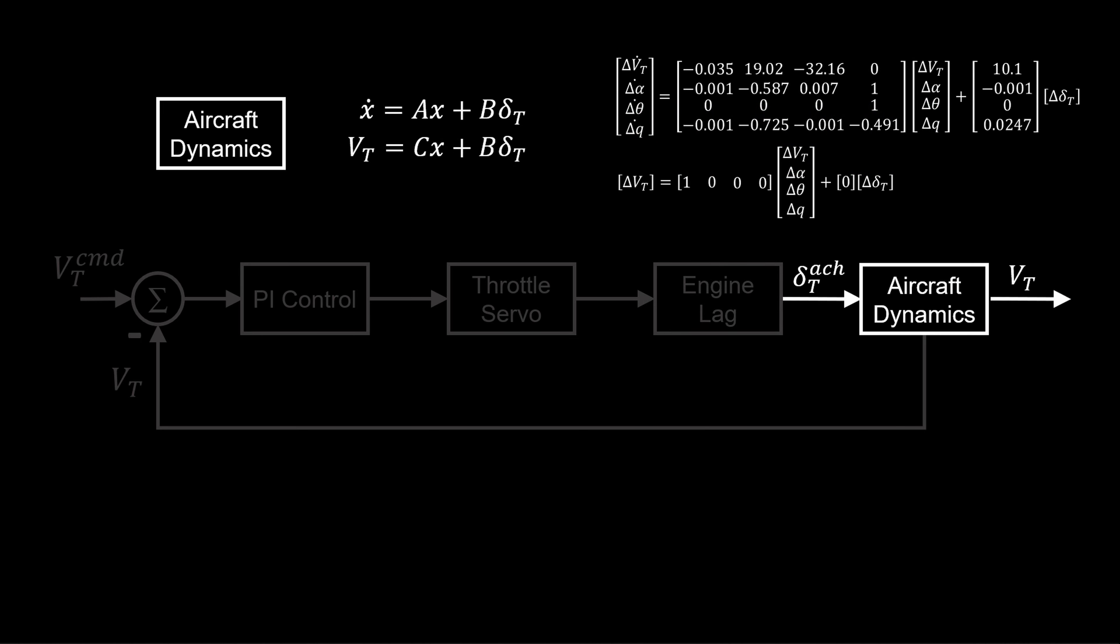Finally, we have our aircraft dynamics. We've already determined this from the linearization process. So we will tune this controller with the full four state system having thrust input, airspeed output. And note that the variables with or without delta are used interchangeably. The deltas will be omitted going forward for brevity.